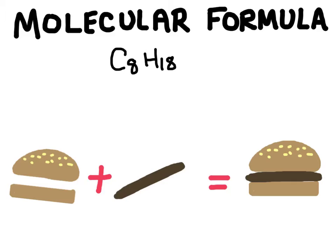There's another type of formula called the empirical formula. And this is a formula that is the lowest whole number ratio between the different elements in a compound. So for example, for octane,